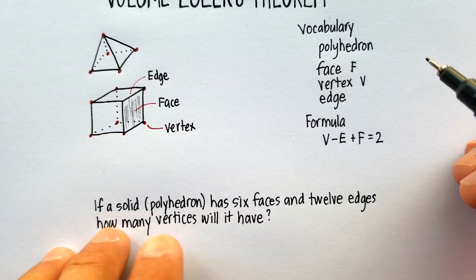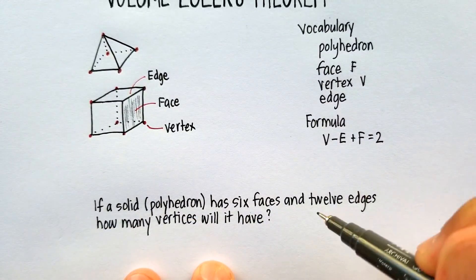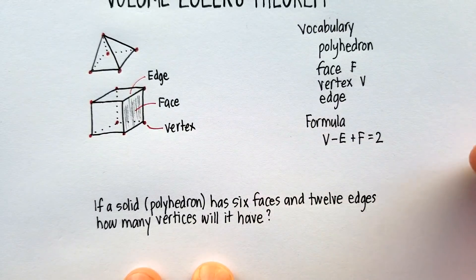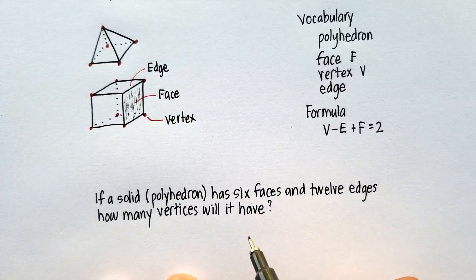So, here's my problem. If I have a solid or polyhedron, and it has six faces, and it has 12 edges, how many vertices will it have? So, let's just use this formula and let's go ahead and substitute.